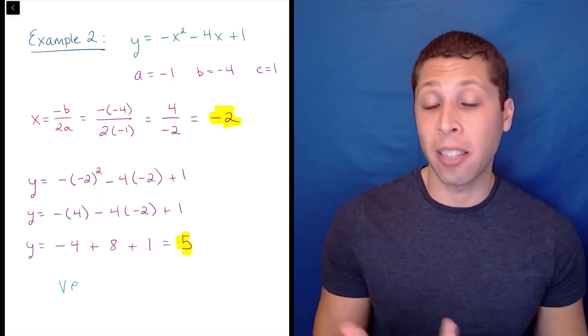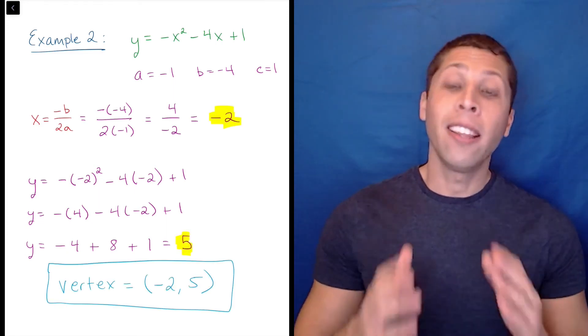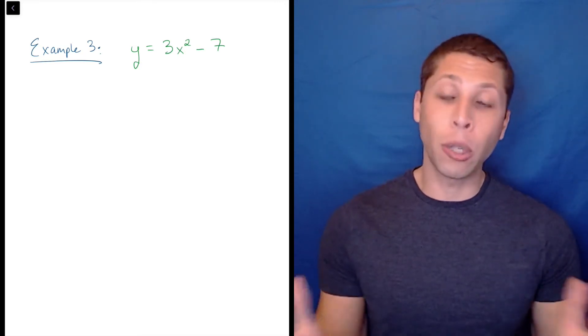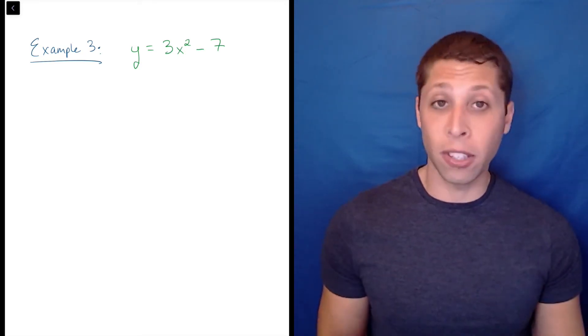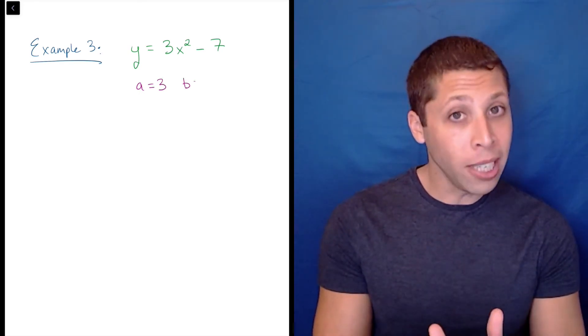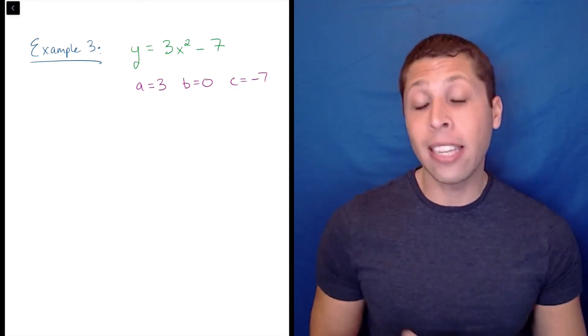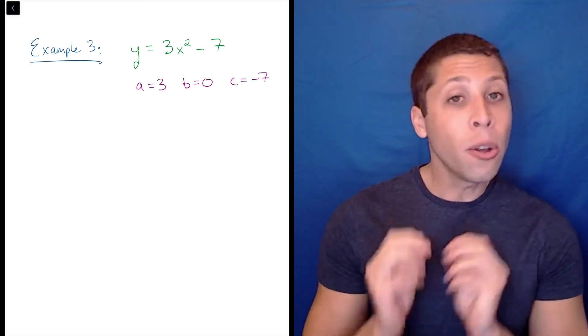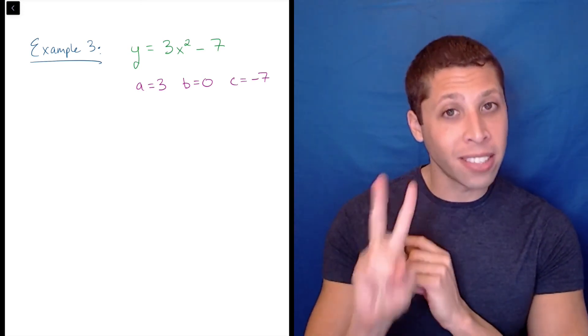The other twist is that not every quadratic equation has all of the standard parts. For this equation, a equals 3, b equals 0, and c equals negative 7.